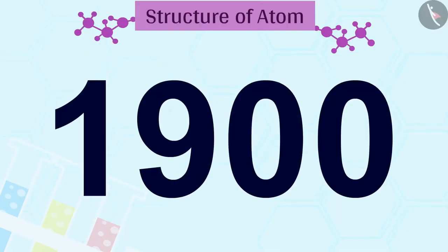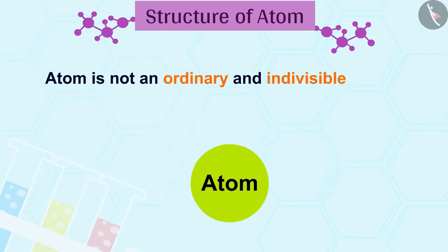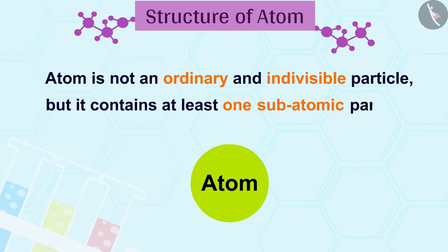By the 19th century, scientists had discovered that an atom is not an ordinary and indivisible particle. But it contains at least one subatomic particle that is electron.